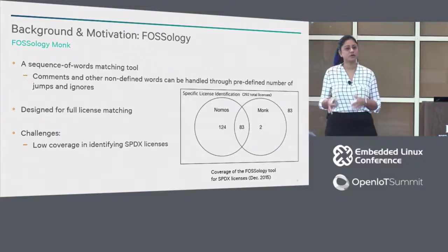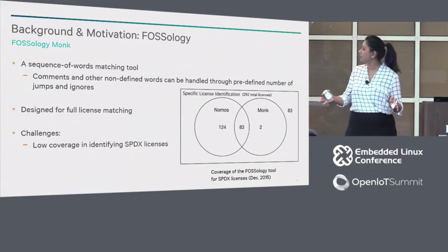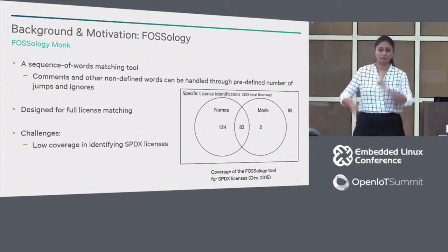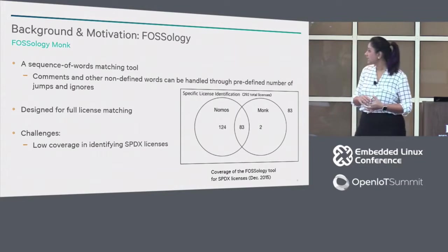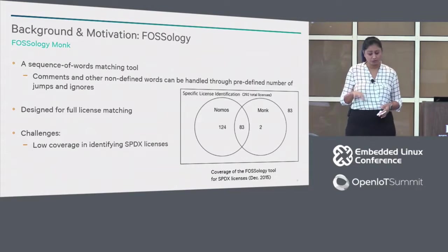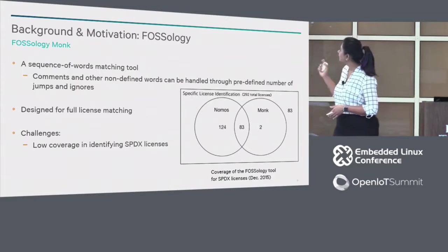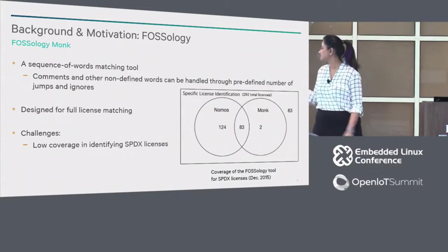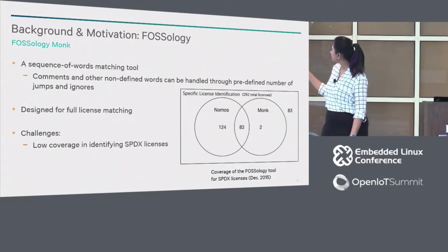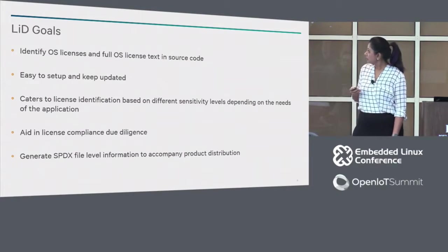Onto Monk — Monk is a sequence-of-words matching tool built to catch full license text. If there are any deviations, there is a configuration where you can say skip X amount of words before bailing out on the match. It does full license matching, but as of our evaluation it had pretty low coverage — about 20% of the SPDX licenses were caught. If you see this Venn diagram, out of the total 292 SPDX licenses as of our evaluation, Nomos caught about 207, Monk caught 85, and neither caught 83 SPDX licenses.